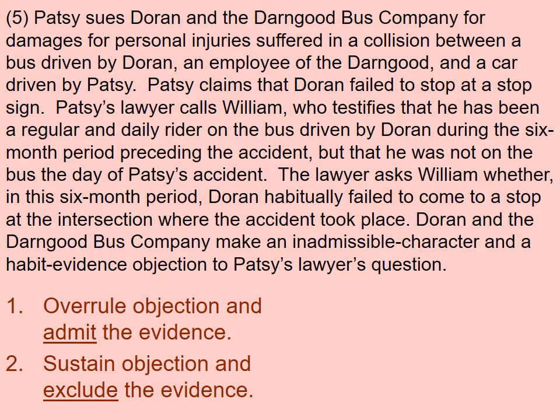Presumably the plaintiff assumes William is going to say Doran never stops at this intersection. Should you overrule the objection and admit this testimony, or sustain the objection and exclude it? I agree with those who chose option one — the objections should be overruled and the evidence should be admitted. The question is calling for habit evidence, not character evidence. If Doran had a habit of not stopping at a particular stop sign, this is some proof that on the day of the accident with Patsy, he didn't stop at that particular sign.